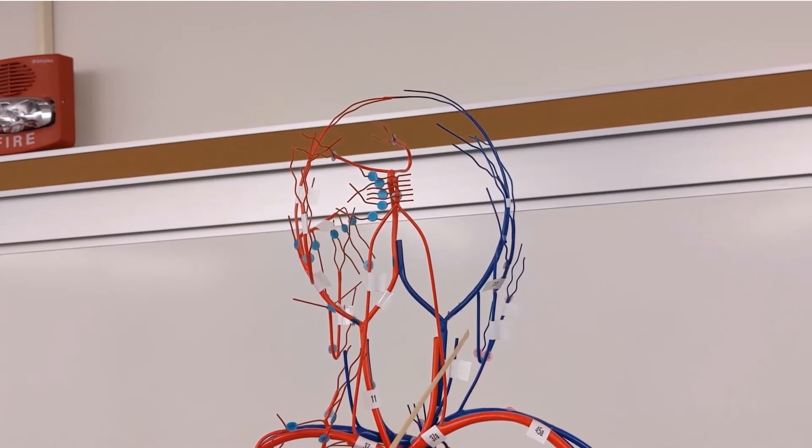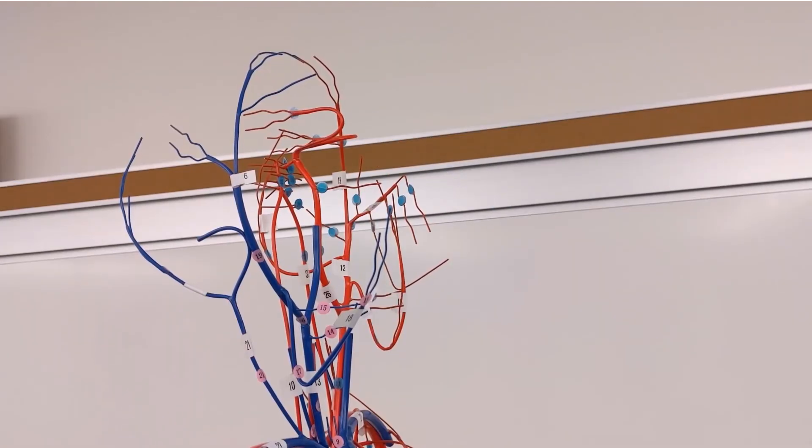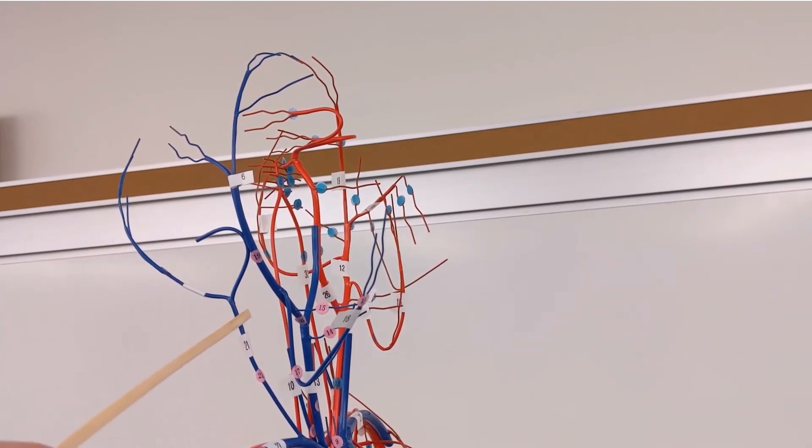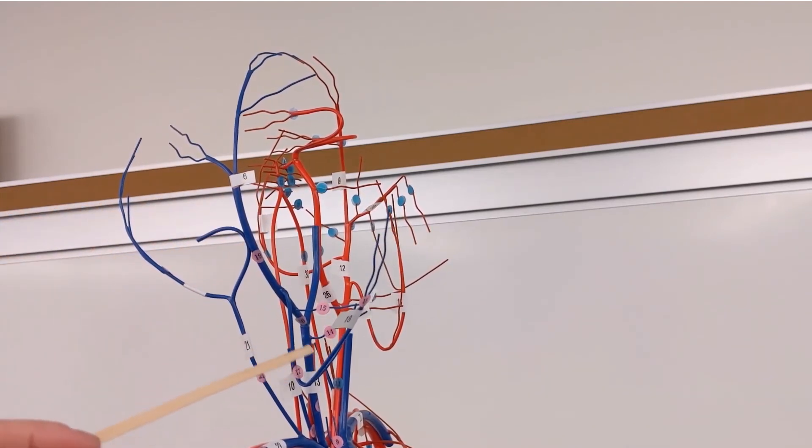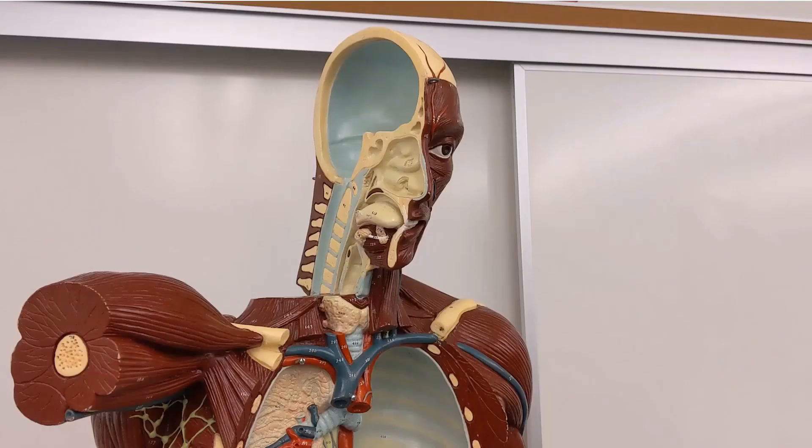So here it's external jugular, vertebral vein, and internal jugular is the most medial. If we look at him from the side, we can see where the occipital vein meets the external jugular vein and where the superficial temporal vein and facial vein come to meet the internal jugular vein.